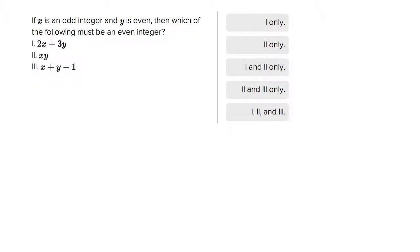This is a great problem that deals with number theory. It's testing whether you know what happens when we multiply, add, and subtract odds and evens. If x is odd and y is even, which of the following must be even? So option one...